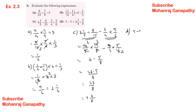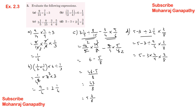D: 5 minus 3 divided by 2 and 1 by 4 into 3 by 8. Handle division first: 5 minus 3 divided by 9 by 4 into 3 by 8. Reciprocate for division, then multiply: 3 threes are 9, 3 ones are 3, 1 four is 4, 4 twos are 8. Answer: 5 minus 1 by 2. LCM is 2: 10 minus 1 by 2 = 9 by 2, equal to 4 and 1 by 2.